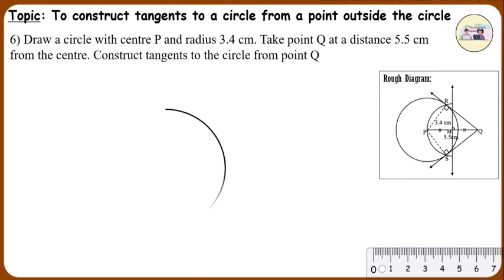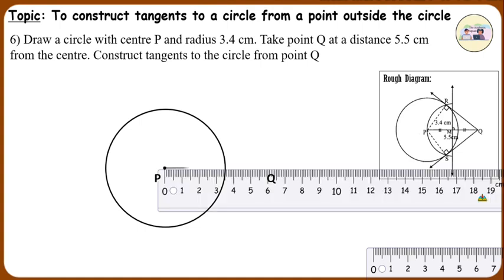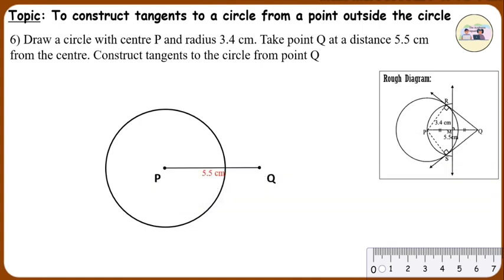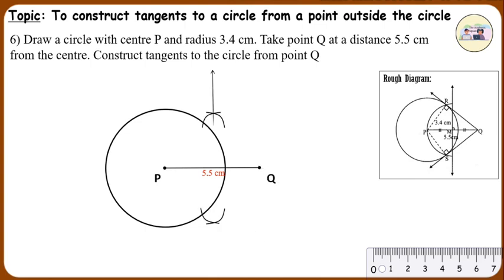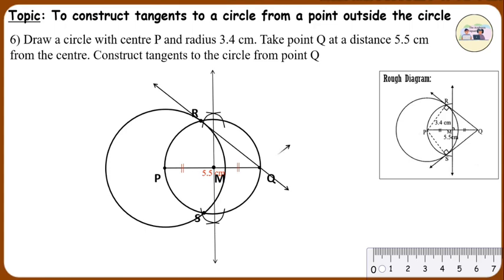Steps of Construction: Construct a circle of radius 3.4 cm with center P. Take a point Q in the exterior of the circle such that the length of PQ is equal to 5.5 cm. Draw segment PQ using a ruler. Draw a perpendicular bisector of segment PQ to get its midpoint M. Draw a circle or an arc with radius PM and center M. Name the points of intersection of the two circles as R and S.